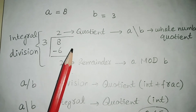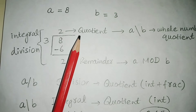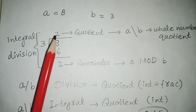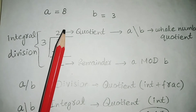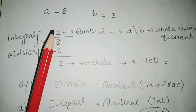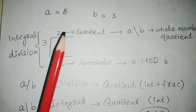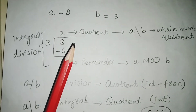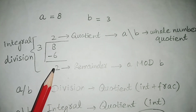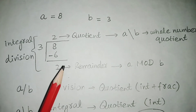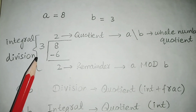In the modulus operator, we write the remainder after division. In integral division, we don't include the fractional part in the quotient — we only take the whole number. So A MOD B returns the remainder, which is 2. The modulus operator returns the remainder of the division.